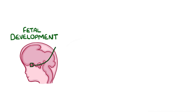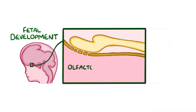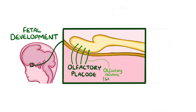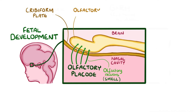Normally, during fetal development, there's a region of the brain called the olfactory placode. Two groups of neurons emerge from that region. The first group contains olfactory neurons that eventually help with sensing smells. These neurons migrate from the olfactory placode and get embedded in the cribriform plate, which is a bone plate that separates the nasal cavity from the brain, forming the olfactory bulb.